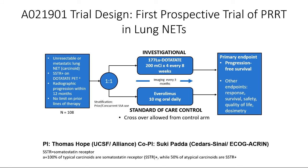This is the trial design of PRRT — the first prospective trial of PRRT in patients with lung neuroendocrine tumors. Patients must have tumor visible on a dotatate PET scan and a diagnosis of lung carcinoid tumor, either typical or atypical. Patients are randomized one-to-one to receive the investigational agent Lutathera (PRRT) versus Everolimus, our standard-of-care control arm. We want to examine how effective these two approaches are and how they compare. It was very important to us that patients could cross over to the investigational arm if they experienced progression on Everolimus. This study just activated; the overall PI is Dr. Tom Hope at UCSF, and I am the co-PI.